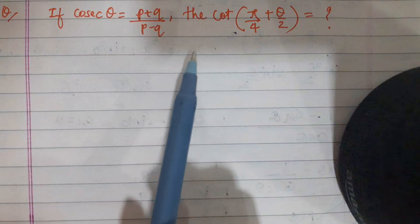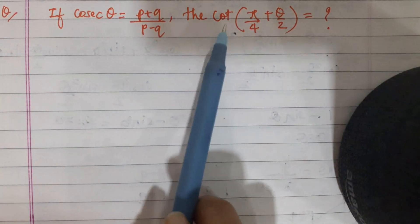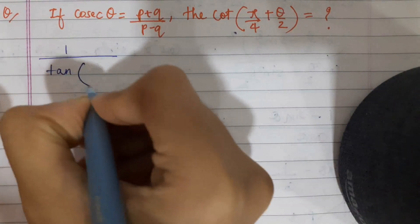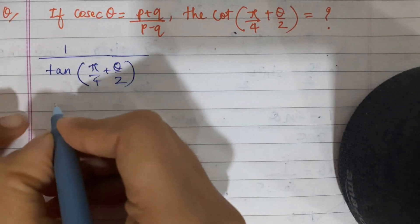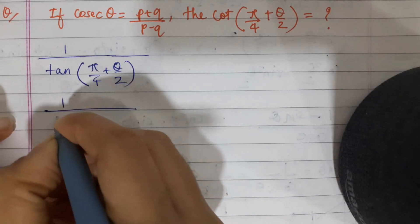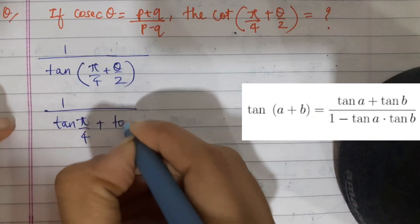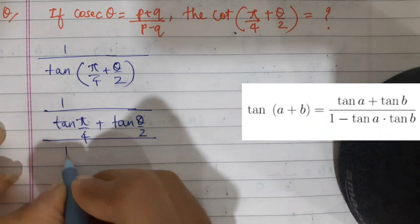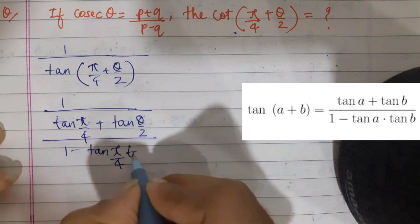The trick in this question is that we will start by simplifying what is asked. We can write cot as 1/tan(π/4 + θ/2), because tan is the reciprocal of cot. Then we will use the formula of tan(a + b) which is (tan a + tan b) / (1 - tan a · tan b).